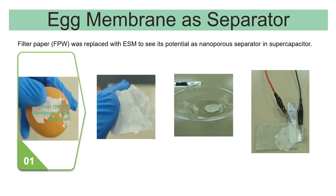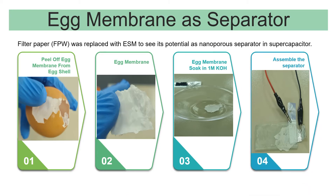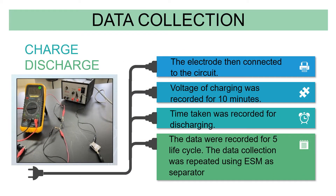Supercapacitor development stages include: pretreatment, activation, carbon production, and preparation of the electrode. For the egg membrane as separator, the egg membrane is peeled off from the egg shell, then soaked in one molar potassium hydroxide. The separator is then assembled, followed by data collection — charging and discharging the electrode connected to a circuit. Voltage of charging was recorded for 10 minutes, and time taken was recorded for discharging.